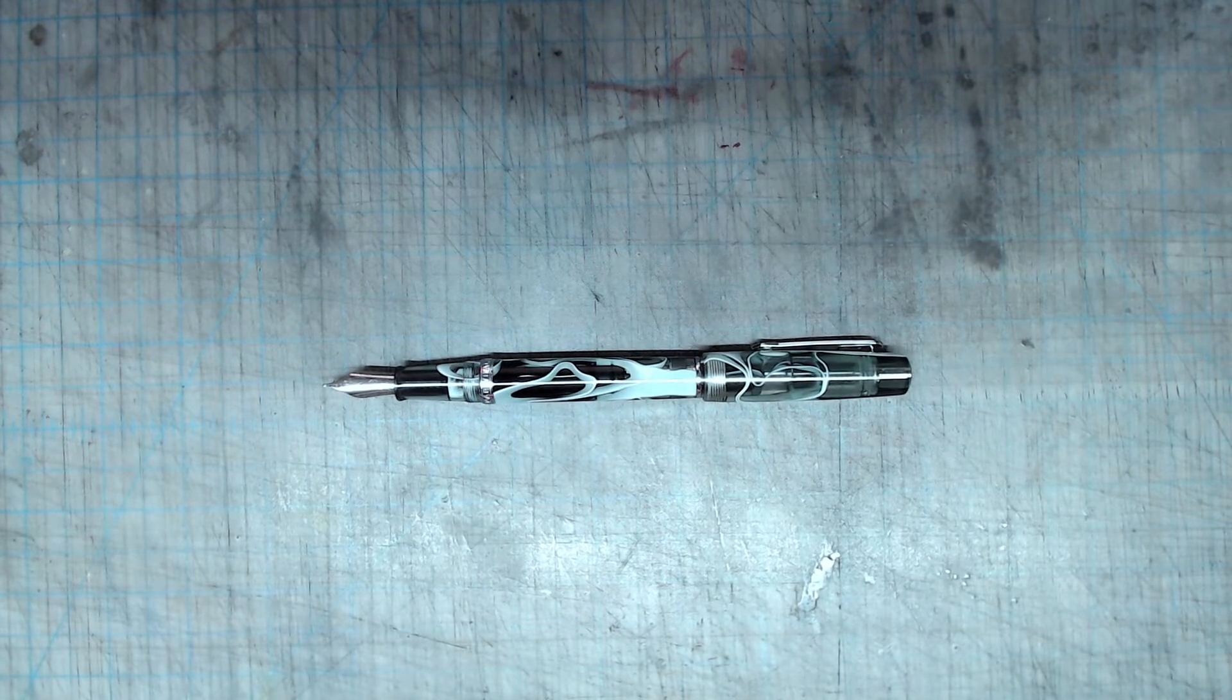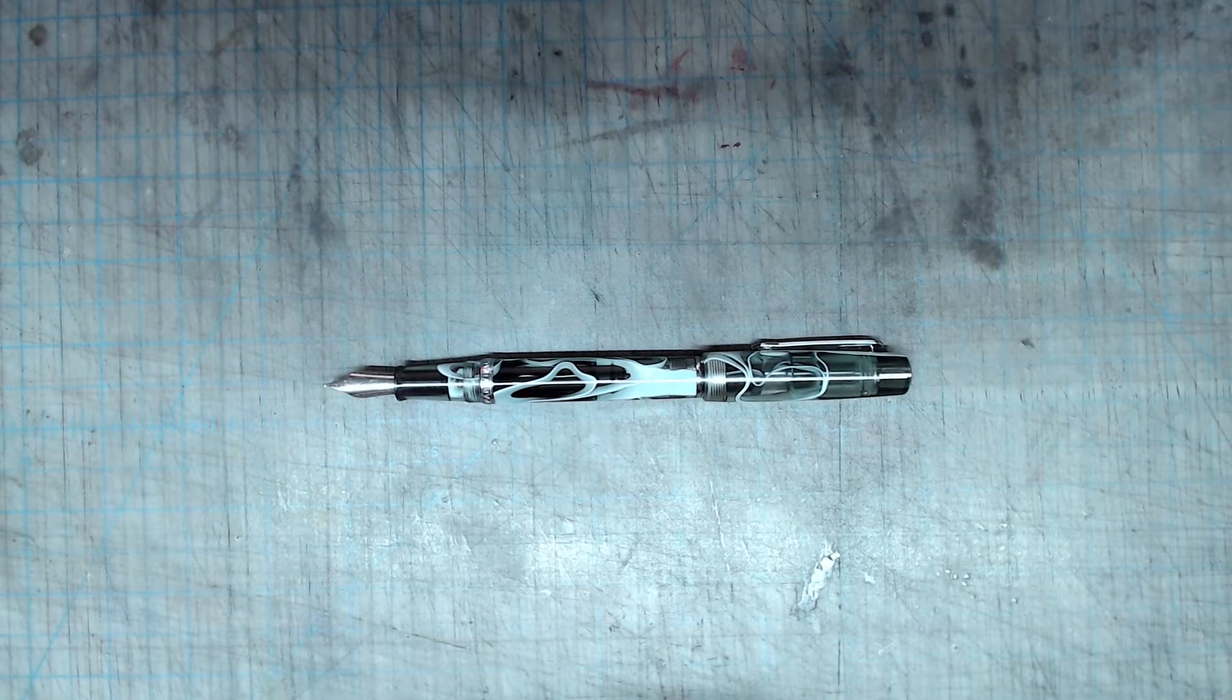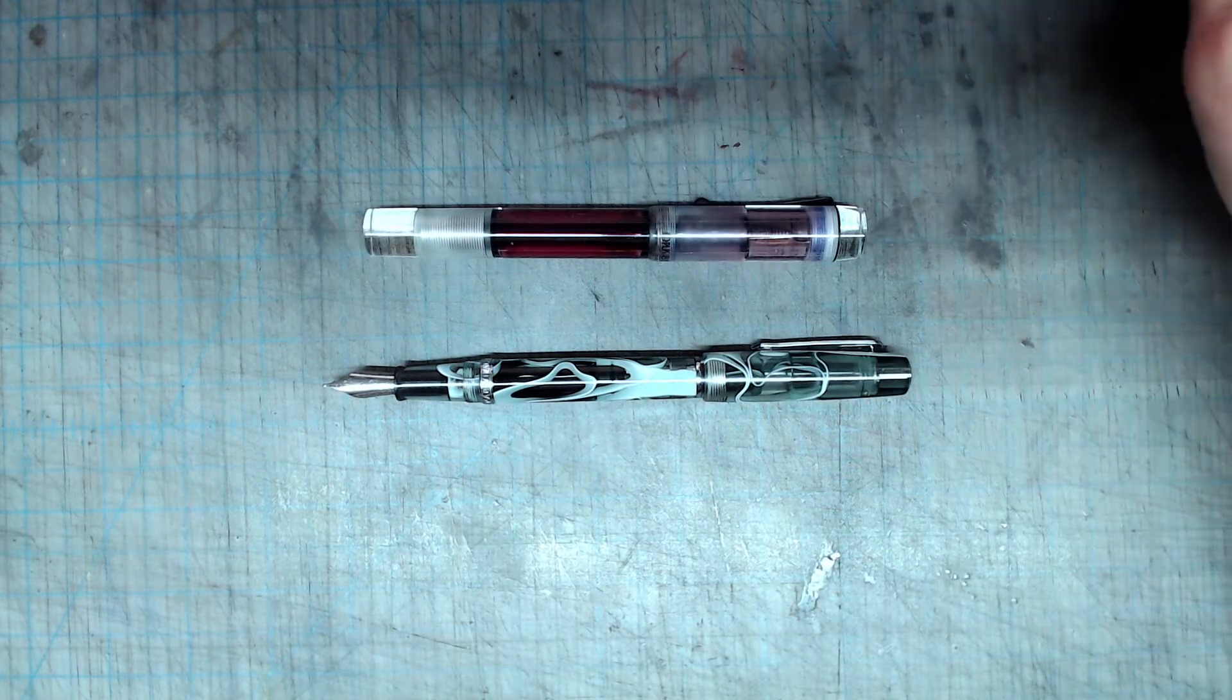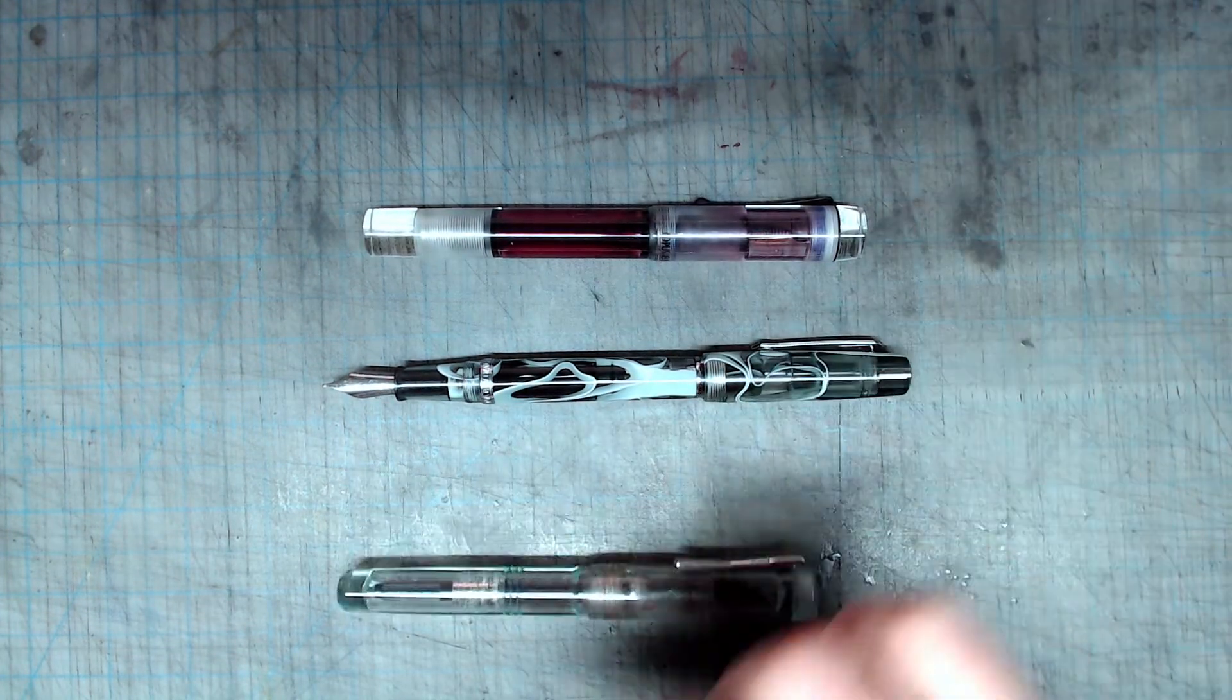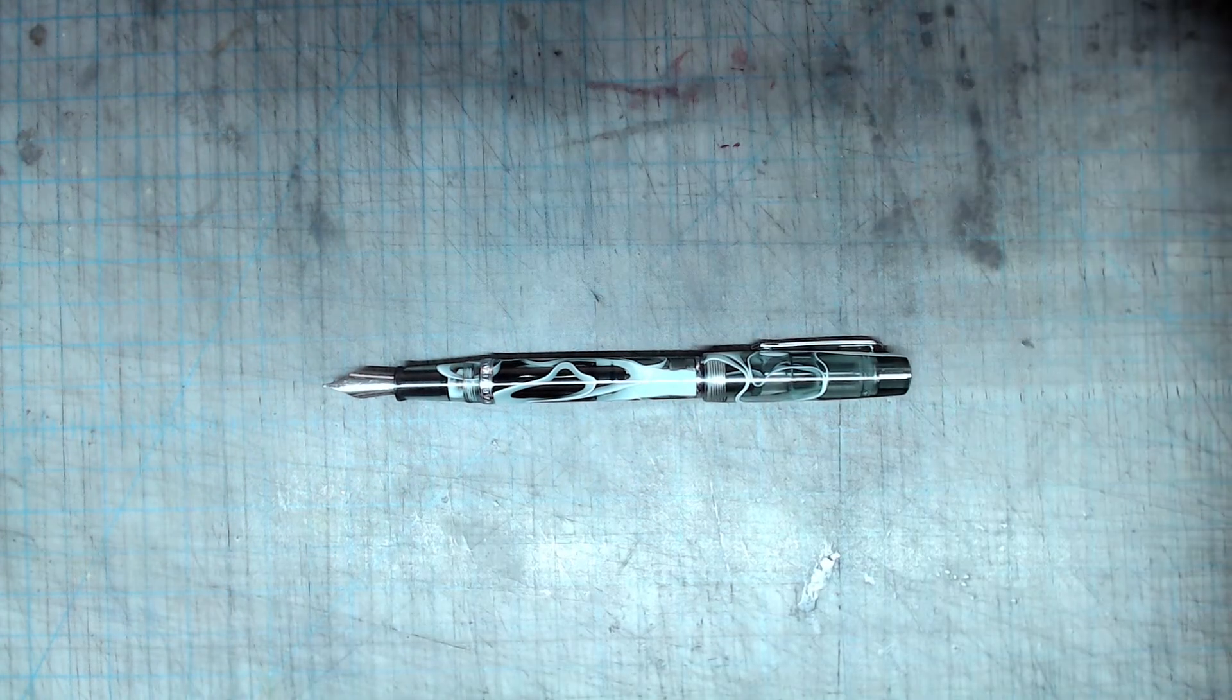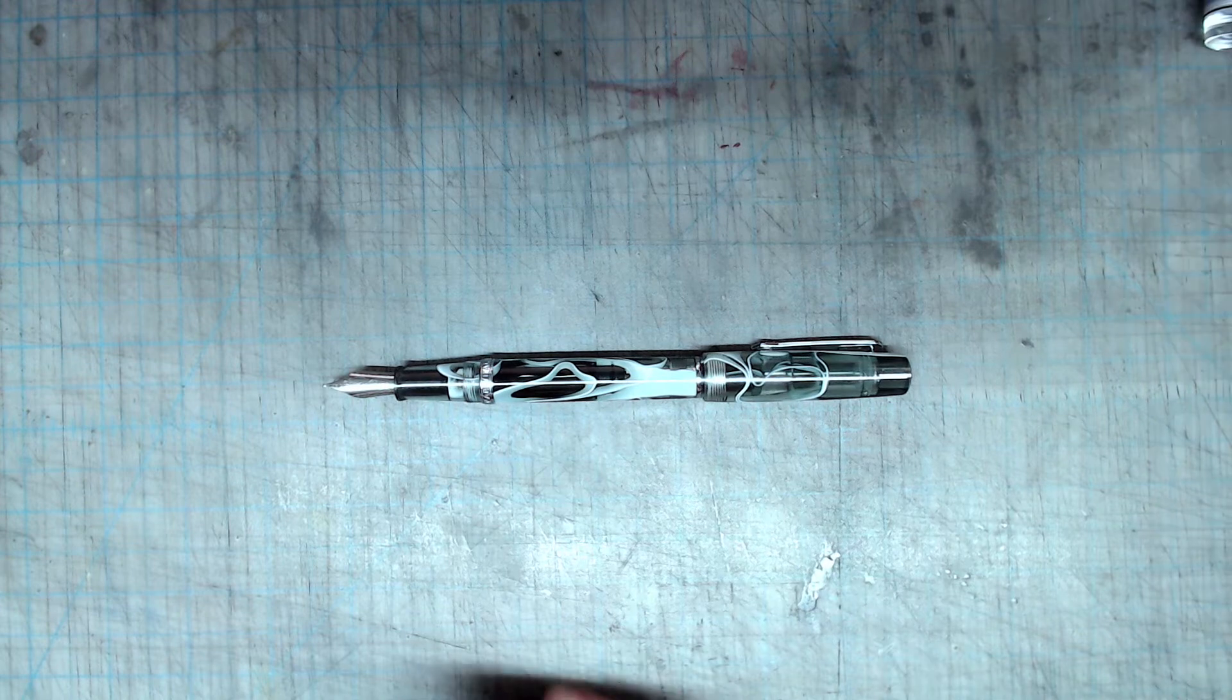While there are a large number of pens that take number 6 size nibs, most of them are much more expensive, such as this Opus 88 demonstrator and this pen made by Franklin Christoph. The pens in the same price range are your basic cartridge converters that don't have a built-in filling mechanism.